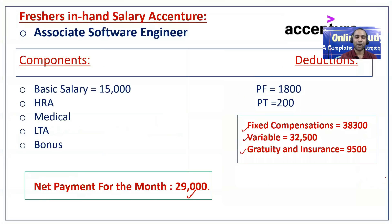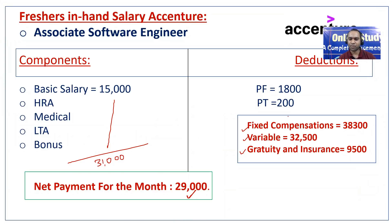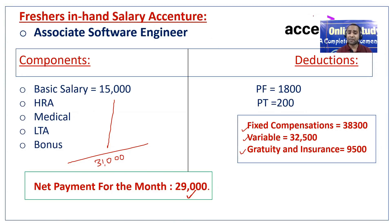In this video I will discuss each and everything. The total amount will come to around 31,000. We will see what all things are there — what is HRA, medical, LTA, bonus — and where your money will go. That is the most important thing you should and must know.